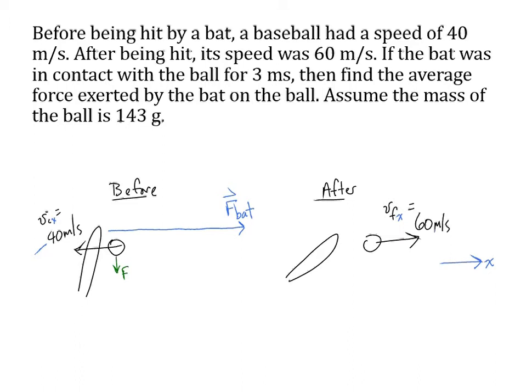However, the gravitational force is very small compared to the force from the bat on the ball. So here's the large force from the bat. That impulse force is going to outweigh any other forces, so that approximately the net force on the ball is just going to be the force from the bat.